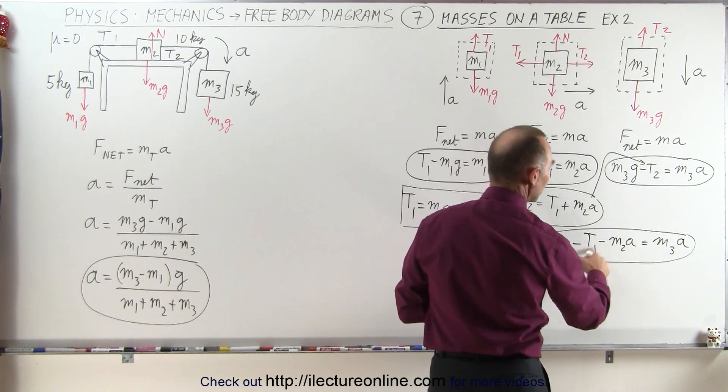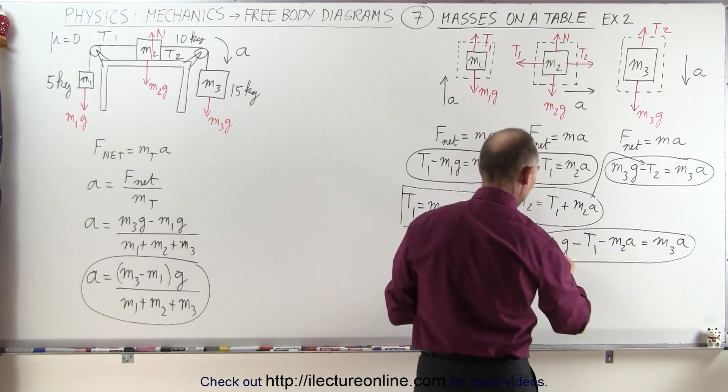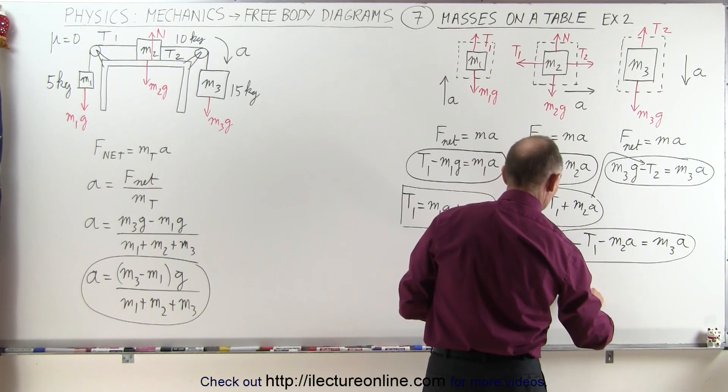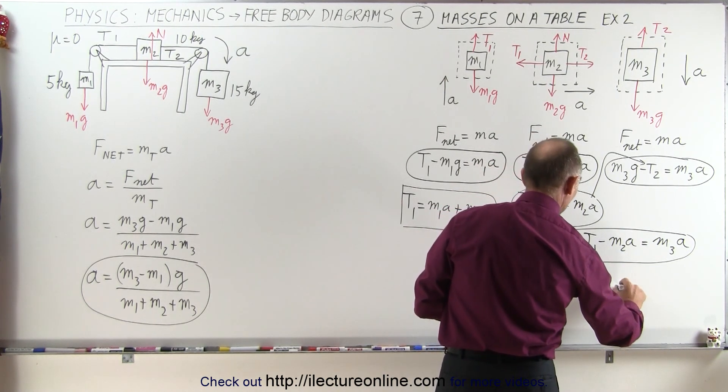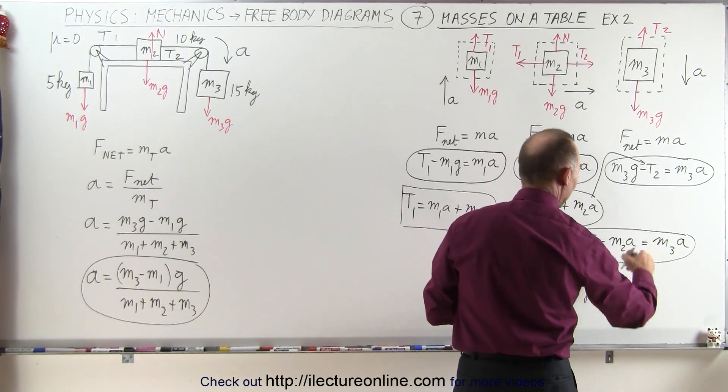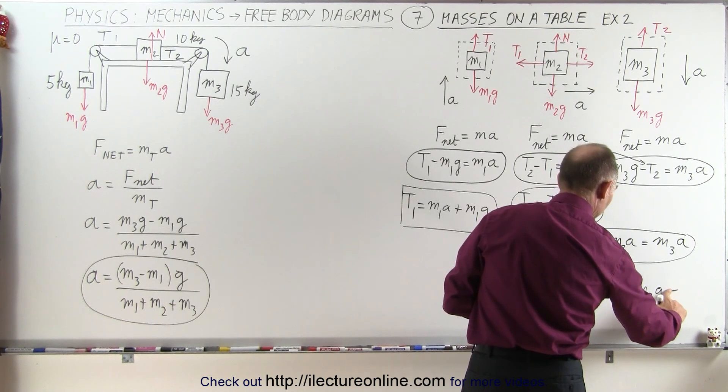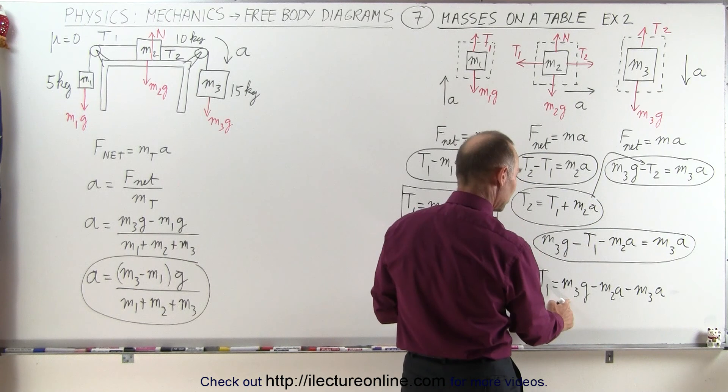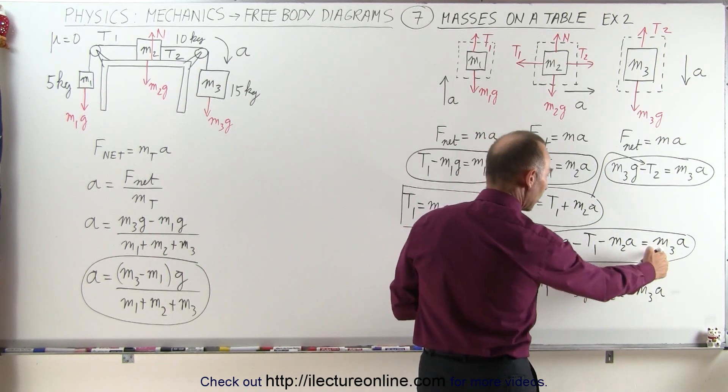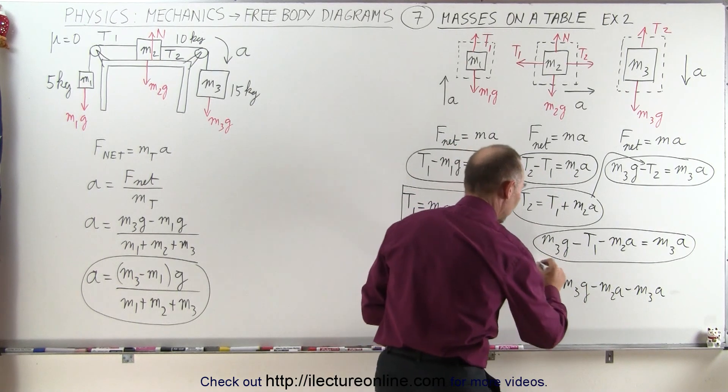The second equation, we're going to move this to the other side and this in here, so we have t1 is equal to, on the left side, we have m3g, over here we have minus m2a, and over here we'll have minus m3a, and that will equal, oh no, I already did that, that will equal t1. So we have t1 is equal to m3g minus m2a, and we move that to the other side minus m3a. So we'll box this equation as well.